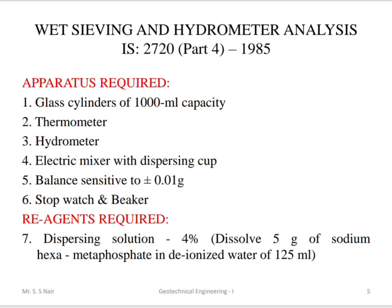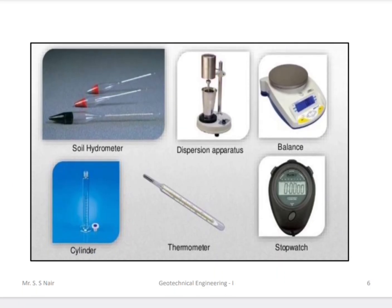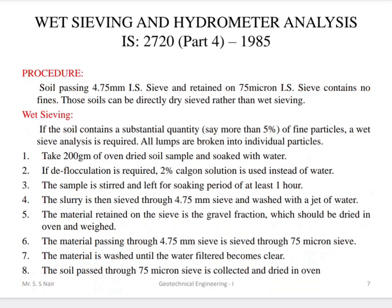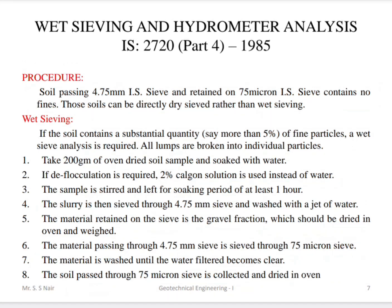A 4% dispersing agent — sodium hexametaphosphate — is used. Here you can see some of the apparatus being used for hydrometer analysis. Particles passing through 4.75 mm and retained on 75 microns are considered. If the soil contains a substantial quantity of fine particles, a wet sieve analysis is required. For that, 200 grams of oven-dry soil sample soaked with water is used.